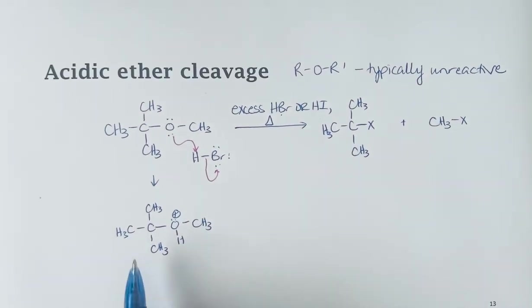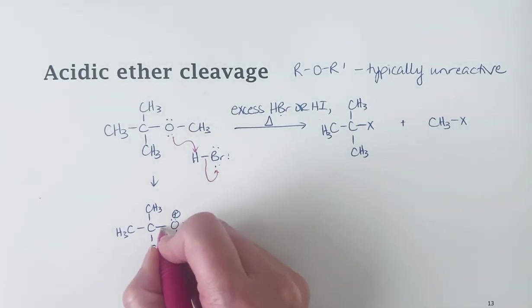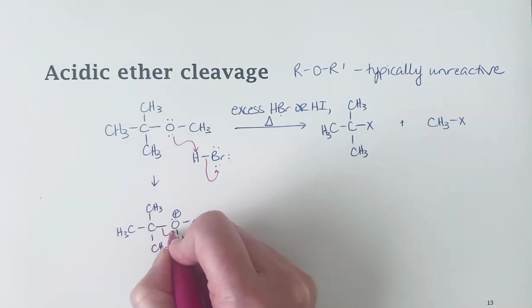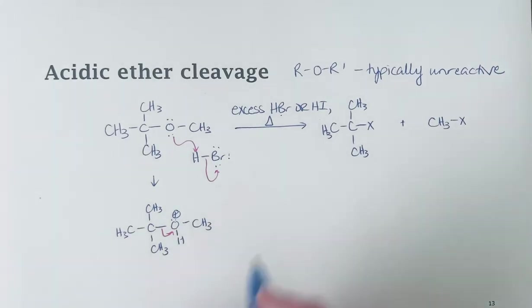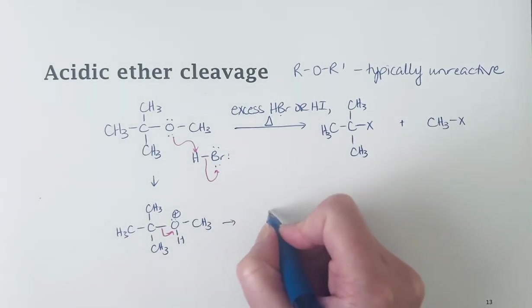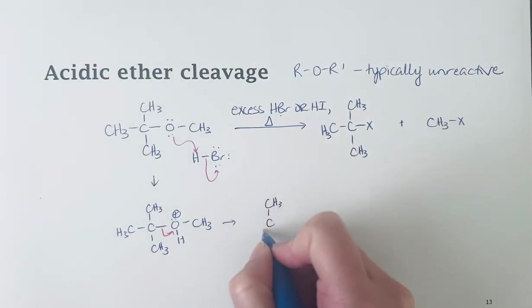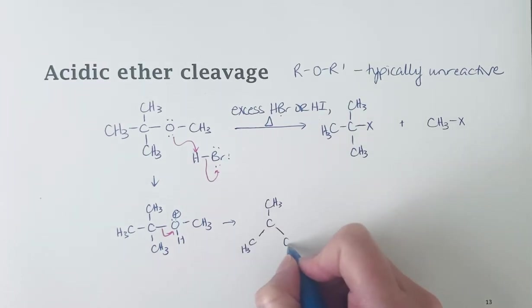In this case, we've got one side of the ether that's tertiary. So once we've got this good leaving group, it can do as good leaving groups do, and it can leave. And so what that will give us is a carbocation, a carbocation from that tertiary side.